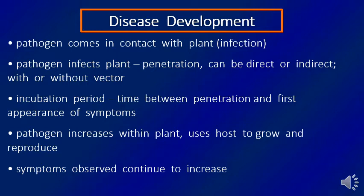When the pathogen comes in contact with the plant, this is known as infection. A pathogen can infect or penetrate the plant by a direct or indirect way, and some pathogens need vectors to transmit to the plant tissue. Each pathogen needs an incubation period — the time between penetration and the appearance of symptoms. During this period, the pathogen starts to colonize plant tissue, then increases within the plant, using the host to grow and reproduce, until symptoms appear on the infected plant.